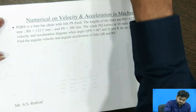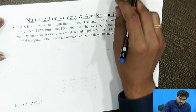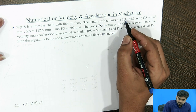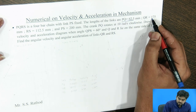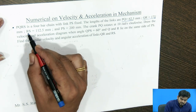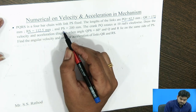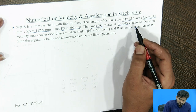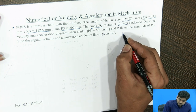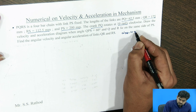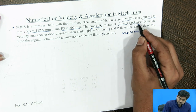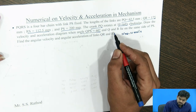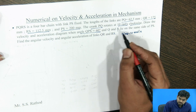PQRS is a 4-bar link mechanism in which PS is fixed. The lengths of the links are given as: PQ = 62.5 mm, QR = 175 mm, RS = 112.5 mm, PS = 200 mm. The crank PQ rotates at an angular velocity of 10 radian per second in the clockwise direction. Draw the velocity and acceleration diagram. Angle QPS is equal to 60 degrees and Q and R lie on the same side of PS.